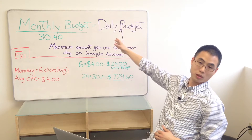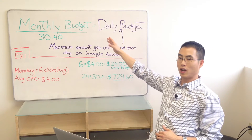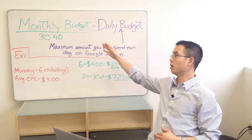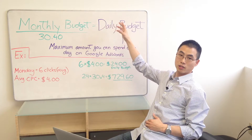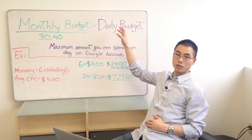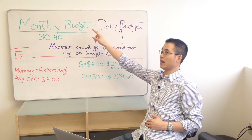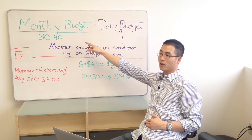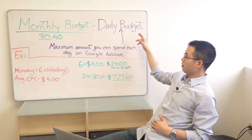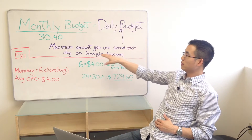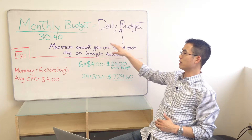Now, let's talk about the formula for coming up with your monthly budget. People will usually say they don't want to spend more than $500 or more than $1,000 a month — that's their monthly budget. The formula that Google actually uses to determine how much you spend is a daily budget. So if you tell me you don't want to spend more than $1,000, I'm going to take $1,000 and divide by 30.4. That gives me your daily budget — how much you're going to spend each day. And your daily budget is the amount that Google will never exceed in a given day.